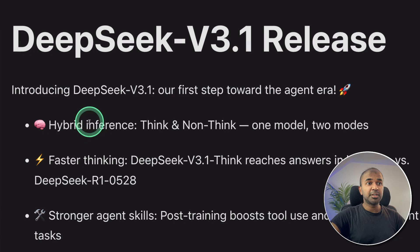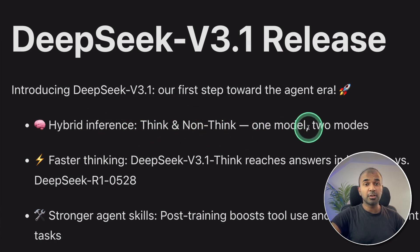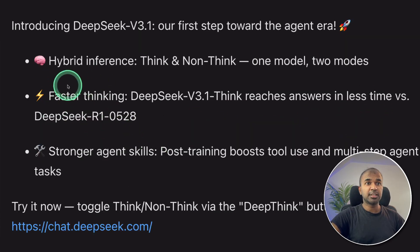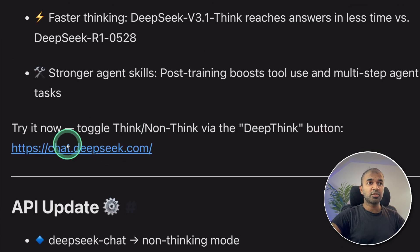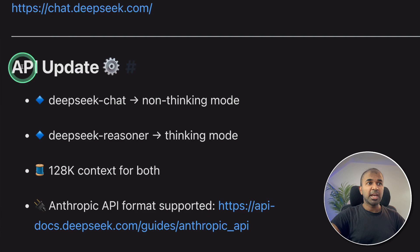With hybrid inference — think and non-think — one model, two modes: faster thinking and stronger agentic skills. You can try it now on chat.deepseek.com.